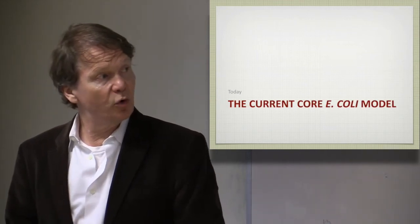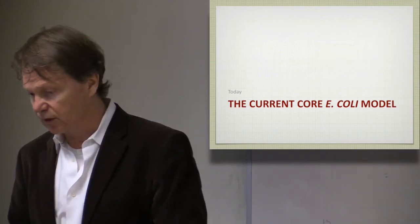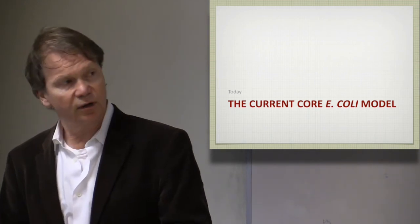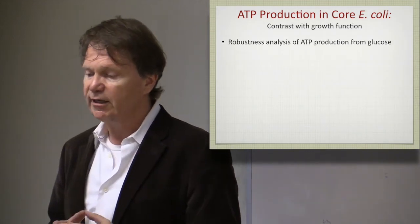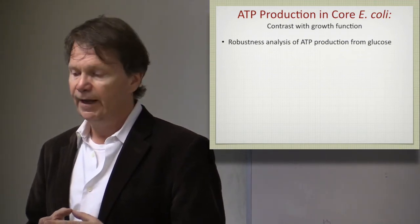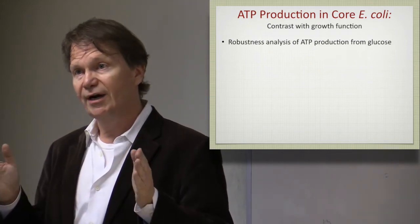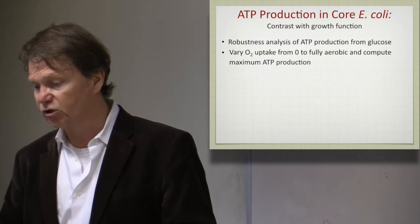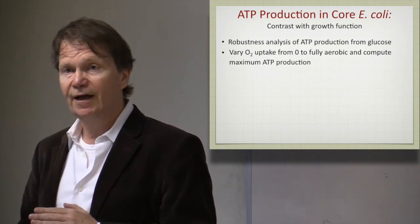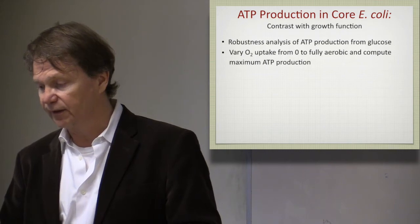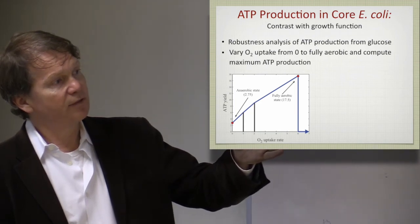With the current E. coli core model, you can carry out similar calculations. We can look at the ATP production rates calculated a couple of lectures ago: the optimal ATP yield with oxygen and without oxygen. Those are end points on a continuous curve we can compute—the ATP yield on glucose as a function of oxygen availability. You trace out a curve similar to what we had before. When you have enough oxygen, 17.5 ATP are produced per mole of glucose; at the other end, 2.75 moles of ATP per mole of glucose consumed.